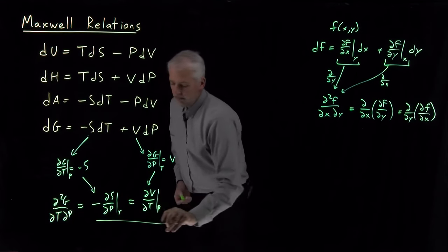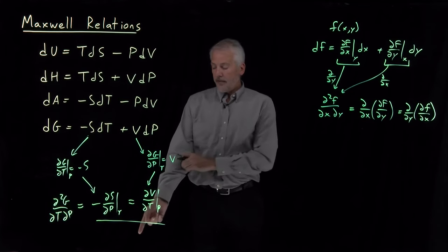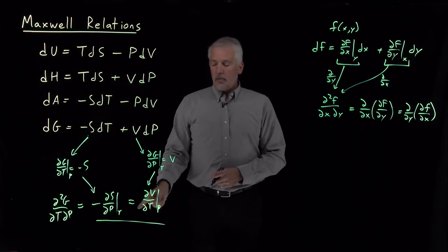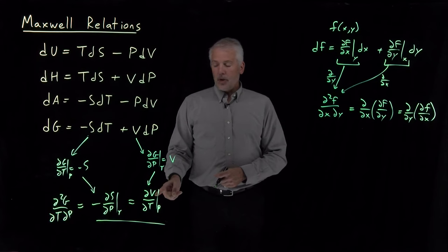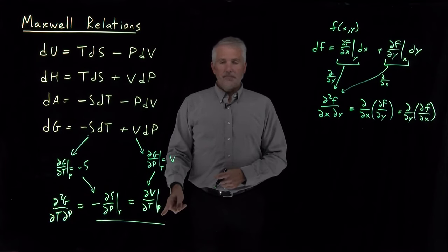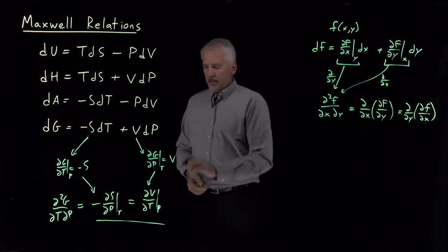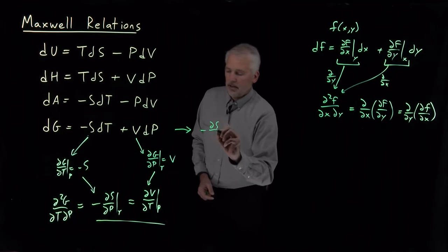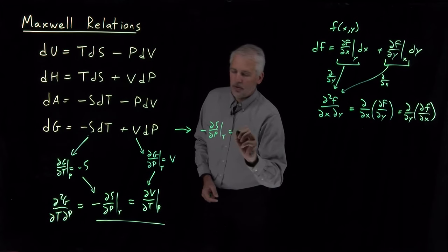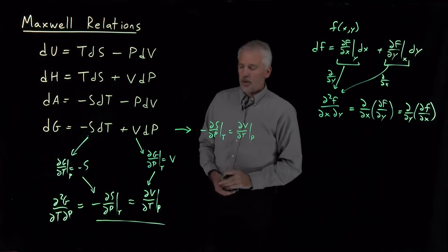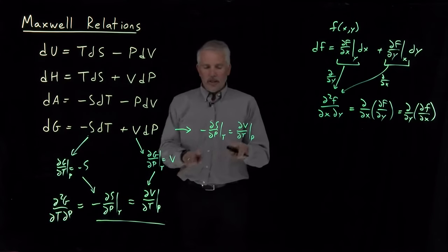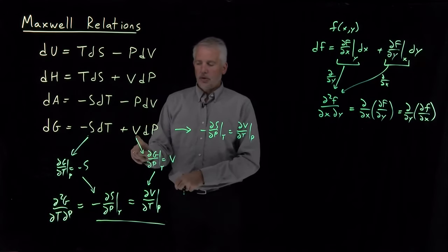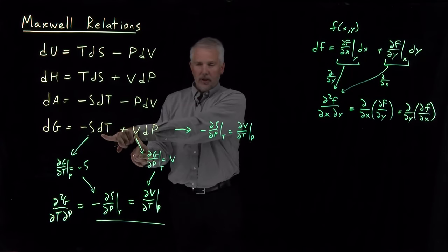That's a very useful thermodynamic relationship. We might not have known how entropy changes as we change pressure isothermally, but we know it's related to — it's the negative of — how quickly the volume changes as we change temperature at constant pressure. This fundamental equation has given us a new thermodynamic relationship: minus dS/dP at constant T is equal to dV/dT at constant pressure. I can read that directly off the fundamental equation: the derivative of one coefficient with respect to the opposite variable equals the derivative of the other coefficient with respect to its variable.